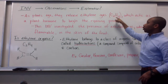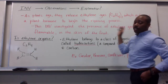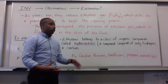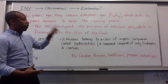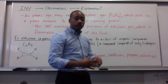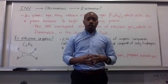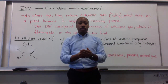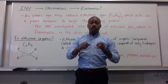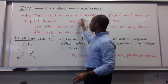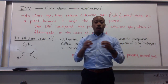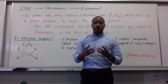As plants age, they release a gas called ethylene. Its chemical formula is C2H4, and it acts as a plant hormone to begin the ripening process of a fruit. In this investigation, you investigated the presence of this ethylene gas, which is flammable and is found in the skin of the fruit. As you squeezed the skin, you released the ethylene gas — it's flammable, so there was combustion happening. Those sparks you saw were the ethylene gas igniting.